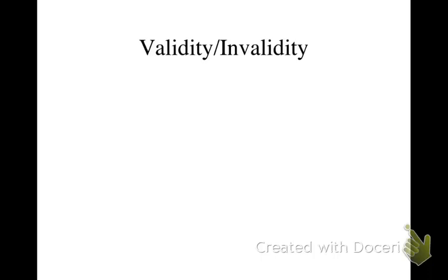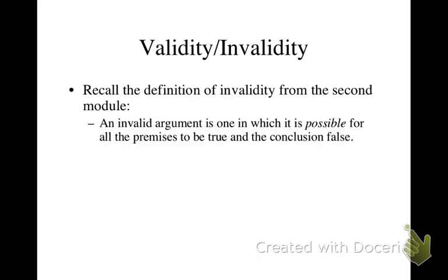This video will explain the definitions of validity and invalidity as recast for truth tables. Recall the definition of invalidity from the second module: an invalid argument is one in which it is possible for all the premises to be true and the conclusion false.